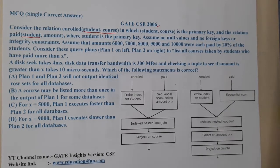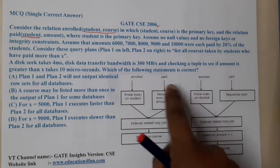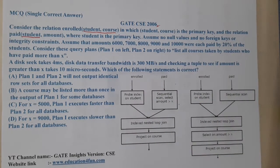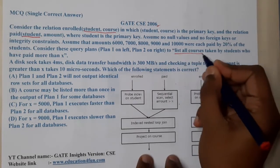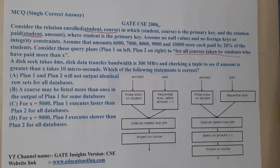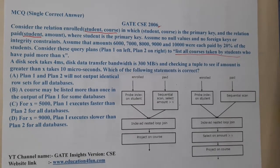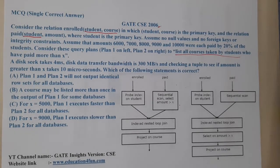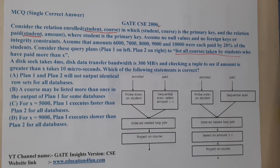We have two query plans. The representation may be missing from the transcript, but we have Plan 1 and Plan 2. The goal is to list all courses taken by students who paid. Given: disk seek takes 4 milliseconds, disk data transfer bandwidth is 300 MBps, and checking a tuple to see if the amount is greater than x takes 10 microseconds.